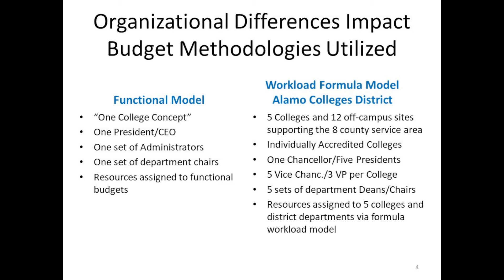Contrasting with Alamo Colleges District, we're always trying to ensure a fair, transparent allocation of the pool of money. We have five individually accredited colleges, 12 off-campus sites, one chancellor, five vice chancellors that coordinate across those colleges and handle centralized district support operations. We also have three vice presidents per college — so 15 vice presidents — with similar functions. Because of that structure, we created a high-level model that looks at how we allocate the pool of money based on where the work is occurring and what the workload drivers are.